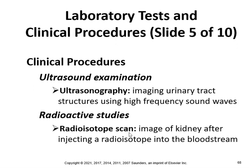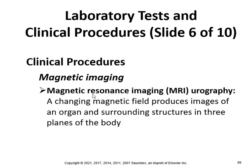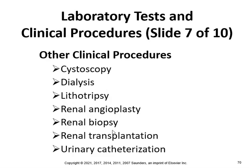A radioisotope scan provides an image of the kidney after injecting a radioisotope into the bloodstream. MRI uses a changing magnetic field to produce images of organs and surrounding structures in three planes. Other clinical procedures include cystoscopy, dialysis, lithotripsy, renal angioplasty, renal biopsy, renal transplantation, and urinary catheterization.